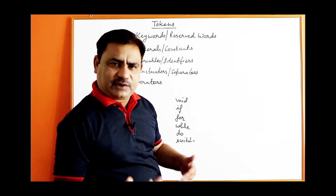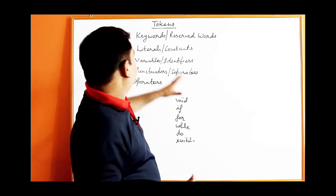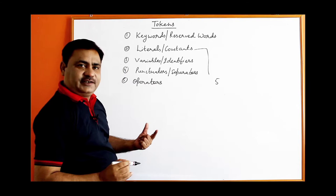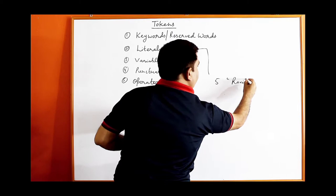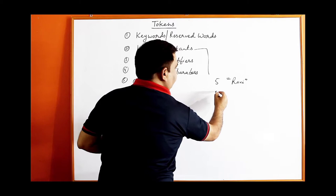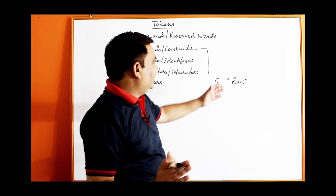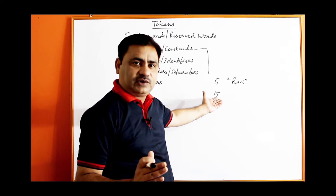The second token is literals. Literals are constants — for example, the number 5 is a constant, a name like Ravi is a constant, and an age like 15 is a constant. These are data items which remain fixed during the execution of the program and never change.